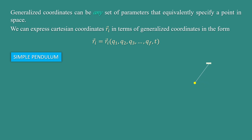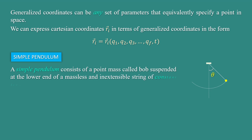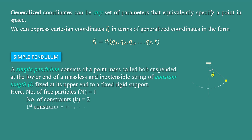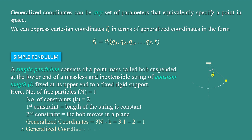For example, simple pendulum. A simple pendulum consists of a point mass, called bob, suspended at the lower end of a massless inextensible string of constant length, fixed at its upper end to a fixed rigid support. Here, number of free particles is 1 and number of constraints is 2. The first constraint is the length of the string is constant, and the second constraint is the bob moves in a plane. Therefore, the generalized coordinate is given by 1, and the generalized coordinate is nothing but theta. By knowing the value of theta, we can determine the position of the bob.